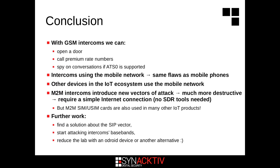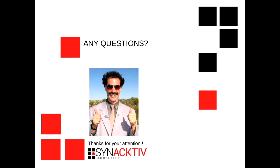As a conclusion: with GSM intercoms, we can open a door, call premium numbers, and spy on conversations. Intercoms have the same flaws as mobile phones. All devices using this technology are affected, not only mobile phones. M2M intercoms introduce new attack vectors because they expose many services. There is still a lot to do: find a solution for the SIP extension enumeration problem, start attacking intercom basebands, and reduce our lab to a smaller Android device or other alternative. Thank you for your attention, and if you have any questions, please ask.